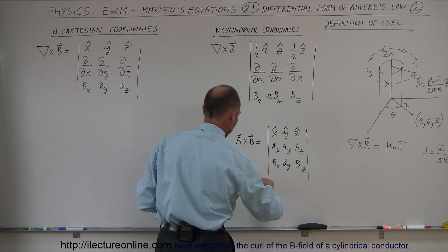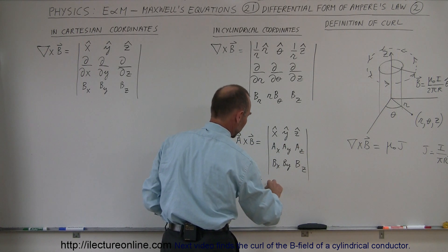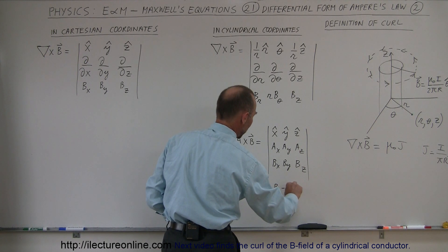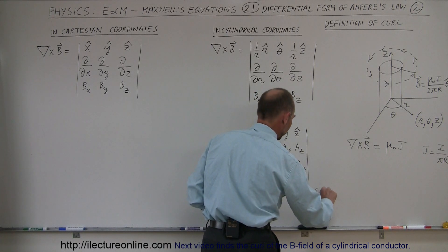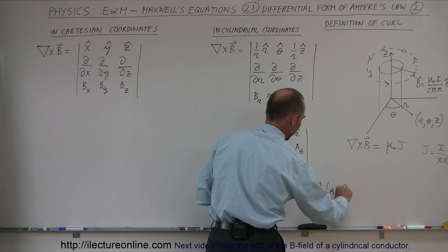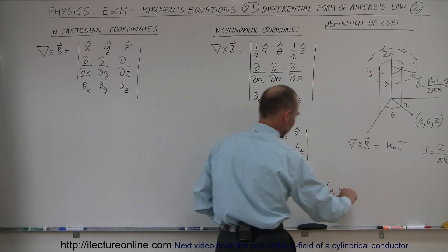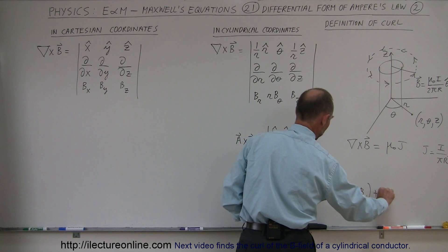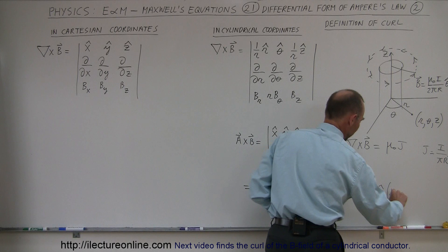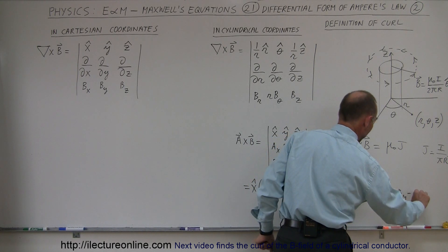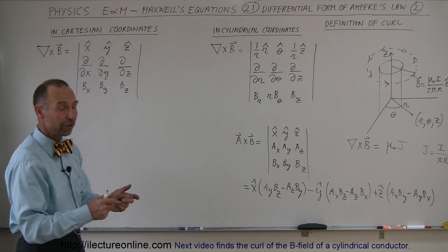The cross product equals the x unit vector times (a sub-y times b sub-z minus a sub-z times b sub-y), minus the y unit vector times (a sub-x times b sub-z minus a sub-z times b sub-x), plus the z unit vector times (a sub-x times b sub-y minus a sub-y times b sub-x). The sign alternates plus, minus, plus. That's how you take the cross product of two vectors in Cartesian coordinates.